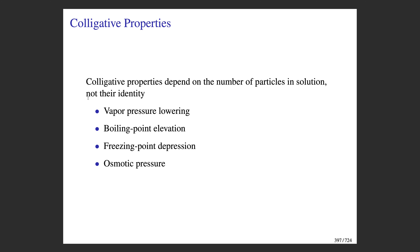For the rest of this talk we're going to go back to the ideal solution picture—we don't need the complications of real solutions to continue. What we're going to talk about next is a set of solution properties called colligative properties. Colligative properties are properties of a solution that depend upon the number of solute particles dissolved in the solution, but they don't depend upon the identity of the solute—you can think of them as generally true for all solutions.